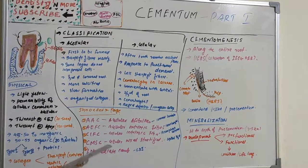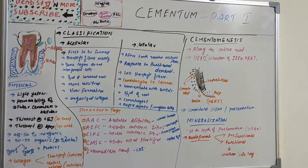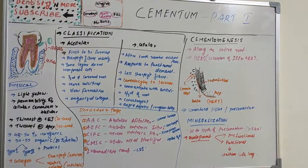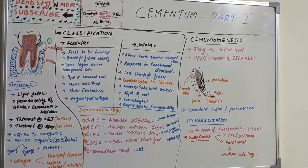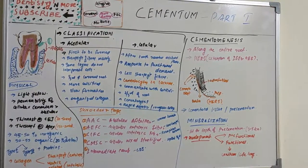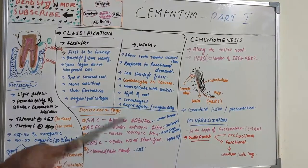The fourth type, cellular mixed stratified cementum (CMSC), is formed by both cementoblasts and fibroblasts. It is a combination of cellular intrinsic fiber cementum and acellular extrinsic fiber cementum. The fifth type is intermediate cementum, which is mostly seen at the cemento-dentinal junction.